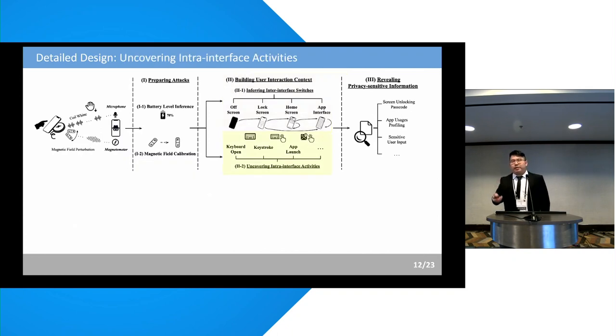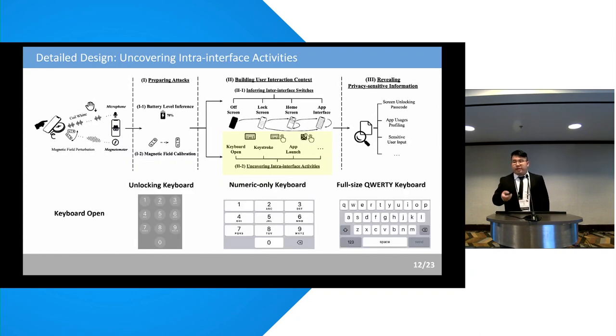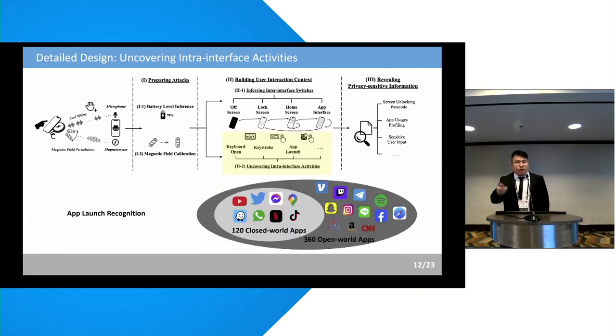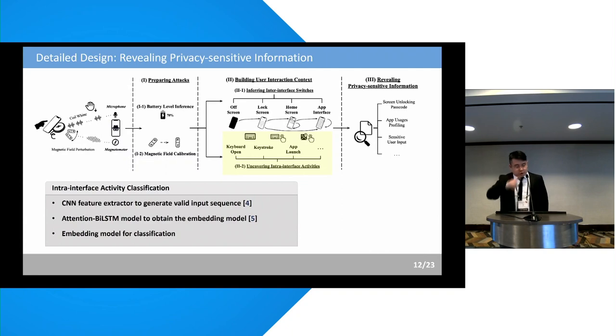After knowing which specific interface the user is performing activities on, WISERS then uses the magnetic field perturbations to uncover intra-interface activities, including keyboard opening of the three default keyboards in smartphone, including unlocking keyboard, numeric-only keyboard, and the full-size QWERTY keyboard, and also the keystrokes on numeric keyboard to uncover passcode and sensitive user input, and also the app-launching recognition, including both closed-world and open-world app recognition. To achieve this intra-interface activity recognition, we take the magnetic field perturbations and use FishTNN feature extractor to generate valid input sequence, and these sequences are used to train an attention-based model. After we obtain this model, we remove layers after the embedding layers to make it an embedding model and use cosine similarity for classification.